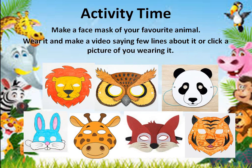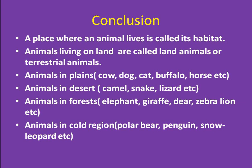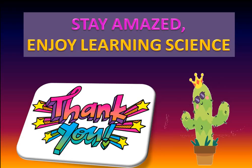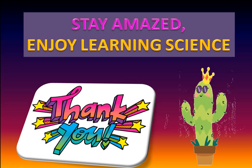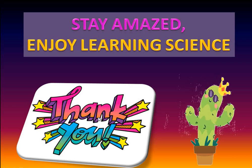I will be so happy to see you wearing it. Now we come to the end of this video lesson. Let's conclude what we have learned. A place where an animal lives is called its habitat or home. Animals living on land are called land animals or terrestrial animals. Animals in plains are mostly cow, dog, cat, buffalo, horse, etc. Animals in desert are camel, snake, lizard, etc. Animals in forests are elephant, giraffe, deer, zebra, lion, etc. Animals in cold regions are polar bear, penguins, snow leopard, etc., and they have thick fur on their bodies. I hope you have learned your lesson well — go through the video once again and enjoy learning science. Thank you and have a nice day.